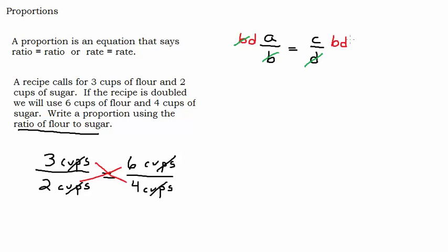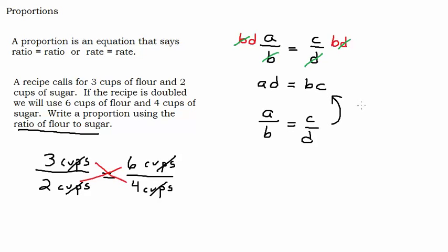Multiplying by b cancels the b in the denominator on the left, and multiplying by d cancels the d in the denominator on the right. On the left side we end up with a times d, and on the right we end up with b times c. So if we start with a/b = c/d, then a times d equals b times c — the product of the diagonals will always be equal. We can use that when solving or checking whether things are proportional.